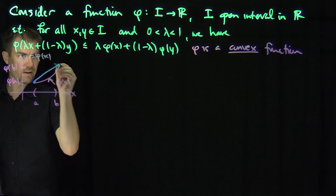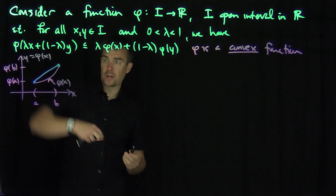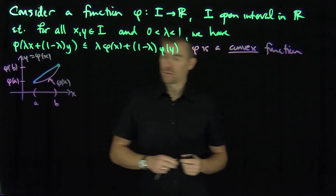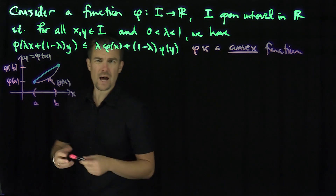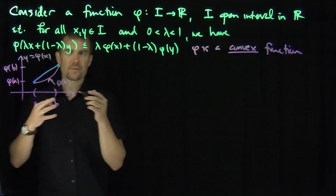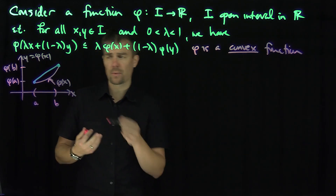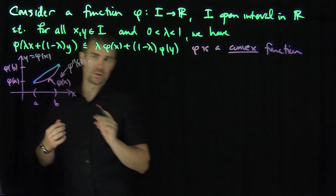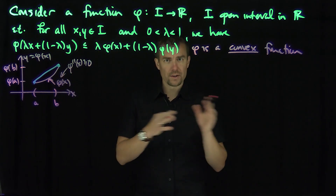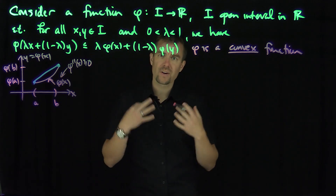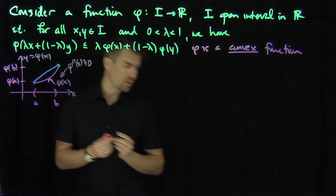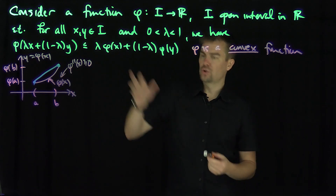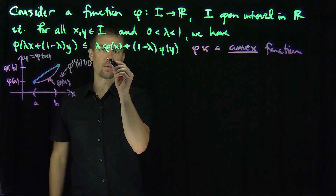The graph is always majorized by the endpoints. The line segment between phi of a and phi of b dominates the graph — so that's a supporting line. We know from basic calculus that convex functions, if there's a sufficient amount of differentiability, satisfy phi double prime of x is greater than or equal to zero. This is the concave up function from Calc 1 and Calc 2. We can induct to get a more general version, and this gives us the first version of Jensen's inequality.